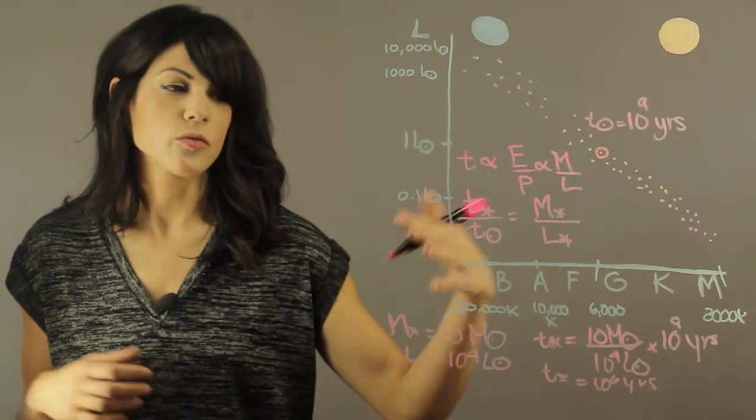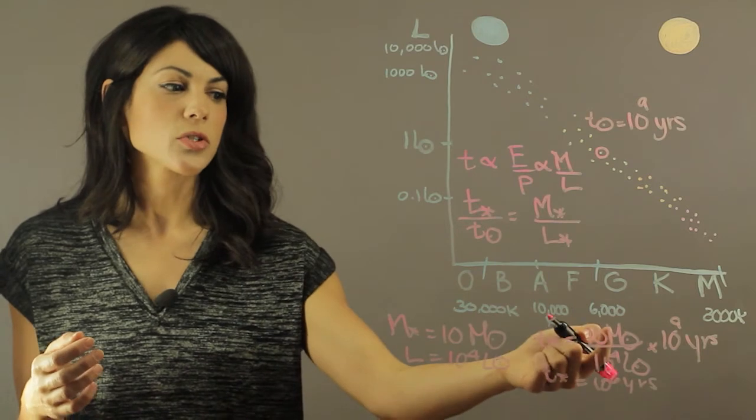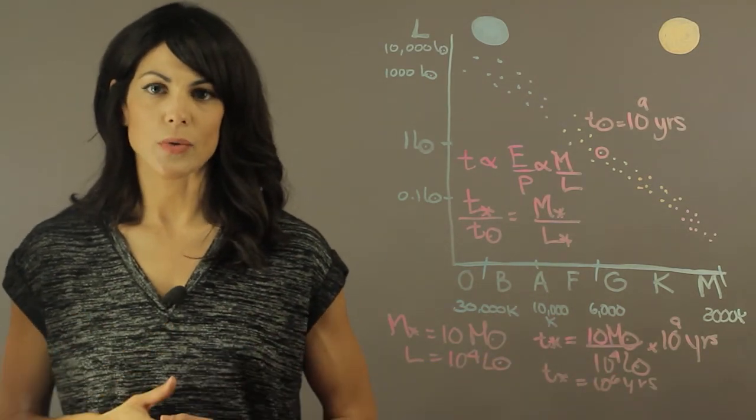So instead of 10 billion years, you're going to have 10 million years. So you see, as you actually get bigger and more luminous, your life expectancy will actually drop.